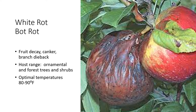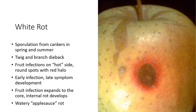Optimal temperatures for the White Rot pathogen are much higher — 80 to 90 degrees Fahrenheit — making this a later season disease. We also see White Rot more in the southern and southwestern part of the state than in the central and eastern parts, which is just an indication of overall summer temperatures. The white rot pathogen sporulates in spring and summer as temperatures begin to warm, producing spores from cankers. It can cause twig and branch dieback, particularly if young tissue is infected.